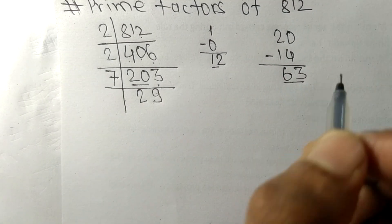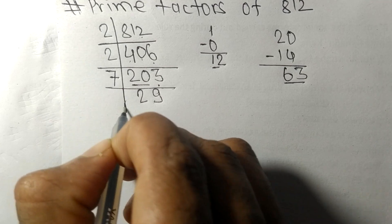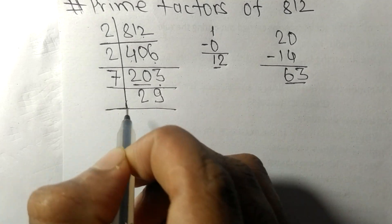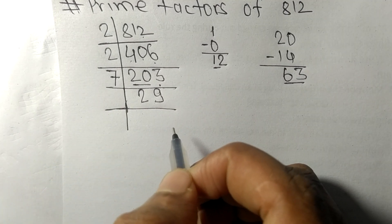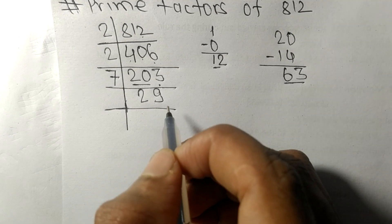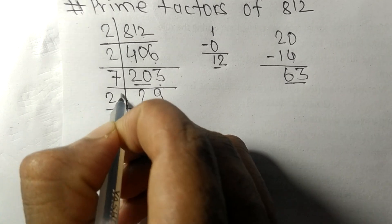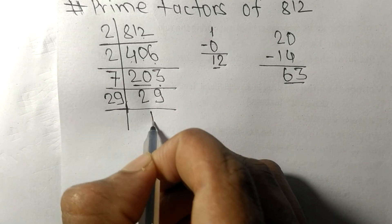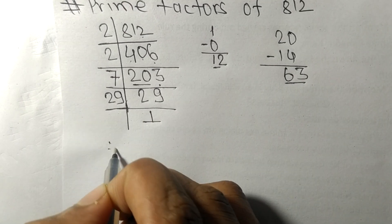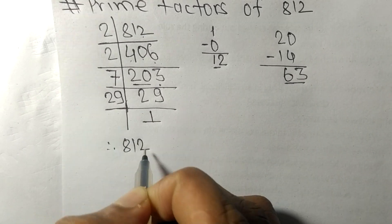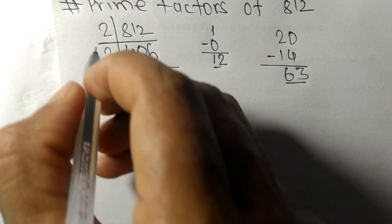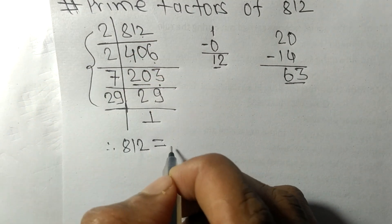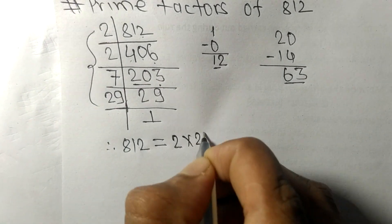29 is a prime number, so it is exactly divisible by 29 only. On dividing we get 1. Therefore, 812 equals 2 times 2 times 7 times 29.